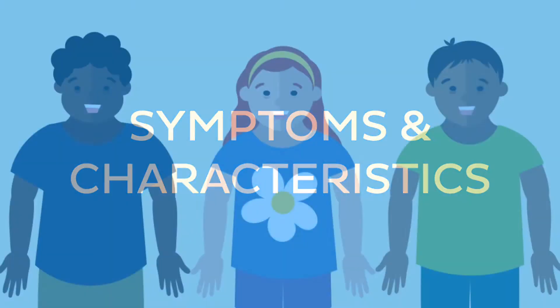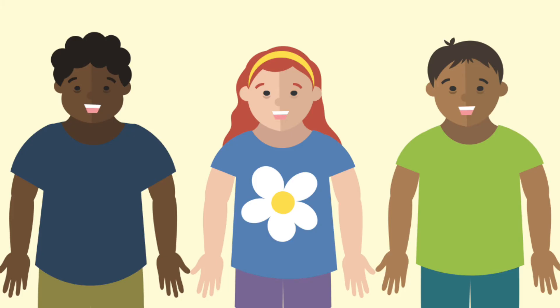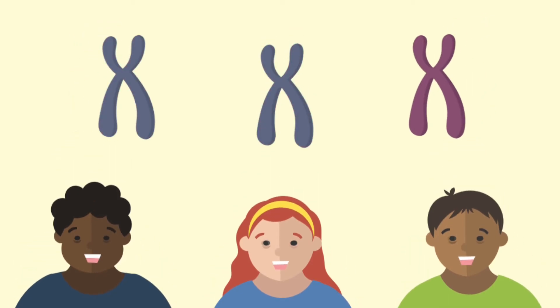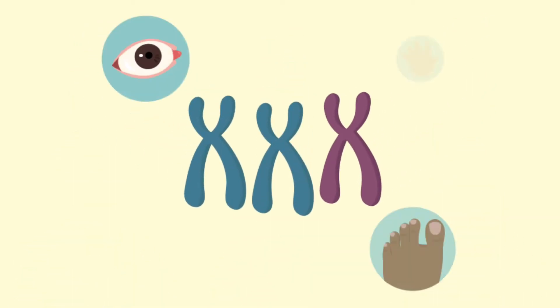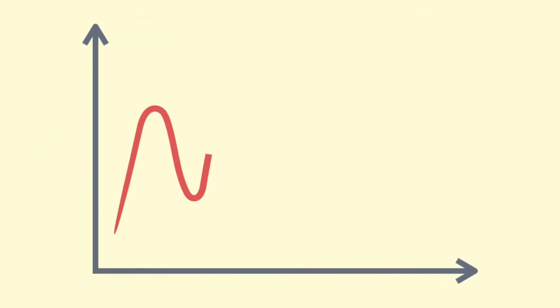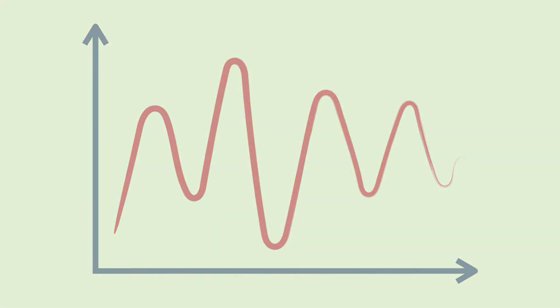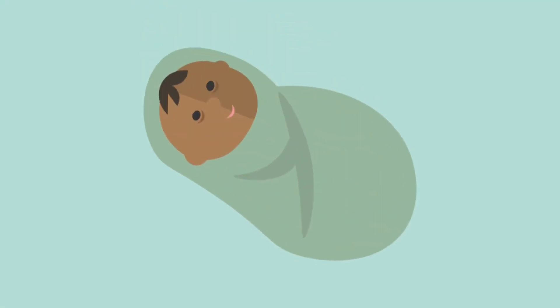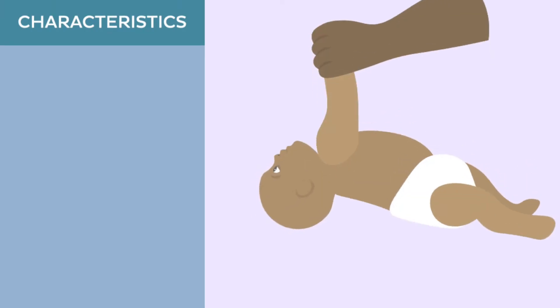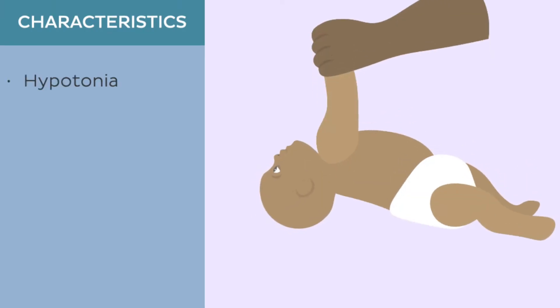You might have already noticed that people with Down syndrome look a little bit different from people with a typical chromosome count. This is because the extra copy of chromosome 21 alters the course of development and causes some different physical features, although the degree to which these features are present can vary widely among individuals. When a baby with Down syndrome is born, these differences in appearance may be very subtle. Even so, most will have at least a few of the following characteristics, including low muscle tone, or hypotonia, which can make them appear floppy.